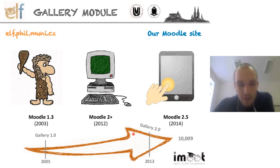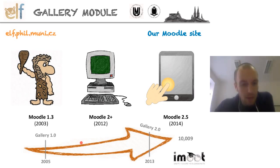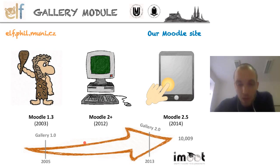We've got quite a history with Moodle, about 11 years now. I'll be talking about the gallery module, which was originally programmed for Moodle 1.5, I think. When we switched to Moodle 2 Plus, we had to come up with a new solution. For some time we started using the Lightbox gallery, which was in the plugin database, but it wasn't what we needed. So finally we decided to reprogram the old gallery into Moodle 2, and this is what I'll be presenting today.